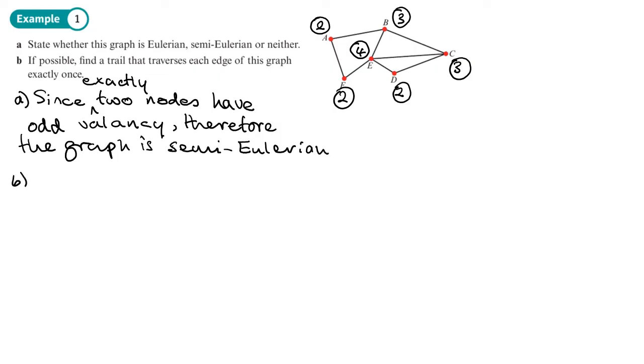Okay, let's have a look at part B. If possible, find a trail that traverses each edge of this graph exactly once. Okay, now here's a little tip for this to work. To find this trail that's going to go through all the edges once, it doesn't mean we're going to start in different places, but the little tip is that we need to start at the odd node and we're going to finish at the odd node. So that means starting at either vertex B or C.